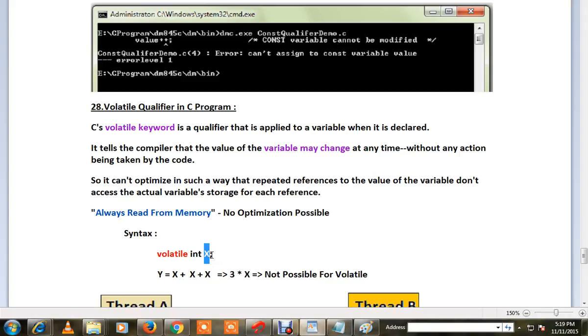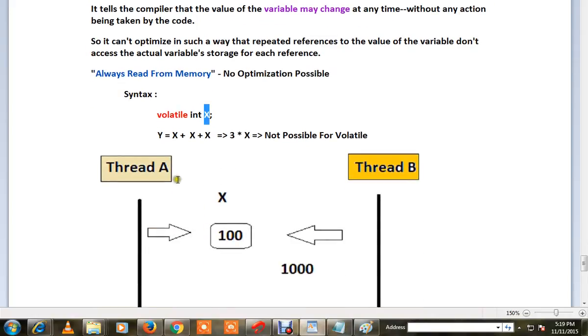For example, with optimization, if you have y = x + x + x, the compiler does some small optimization like this. This is not possible for volatile variable.